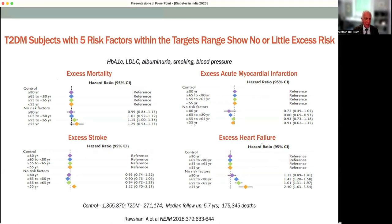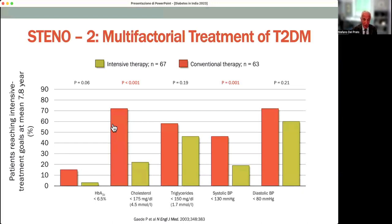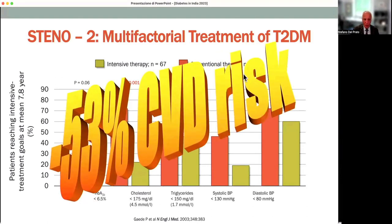These data were generated in a large population through retrospective epidemiological analysis. However, this concept that controlling multiple cardiovascular risk factors can be instrumental in reducing the burden of cardiovascular disease is perfectly in line with a very small but powerful intervention trial reported more than 20 years ago — the STENO-2 study. There, strict control of glycemia, cholesterol, triglycerides, blood pressure, and the use of antihypertensive drugs was associated, in a small number of individuals compared to those with conventional therapy, with an incredible 53% reduction in cardiovascular risk.